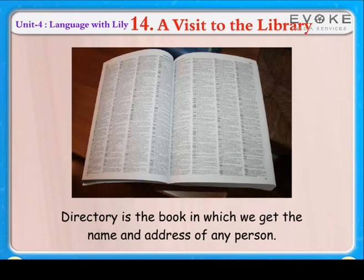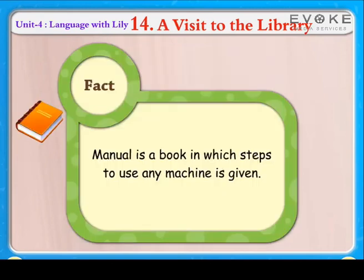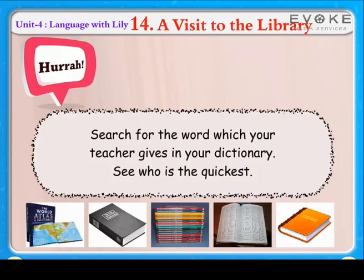A directory is the book in which we get the name and address of any person. A manual is a book in which steps to use any machine are given. Hurrah! Search for the word which your teacher gives in your dictionary — see who is the quickest!